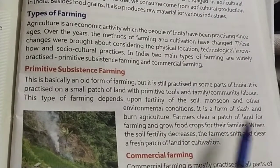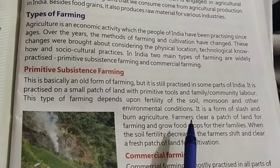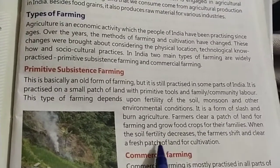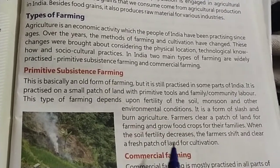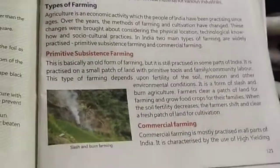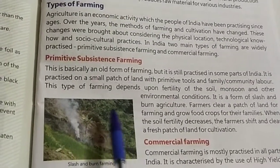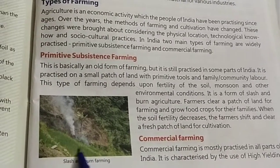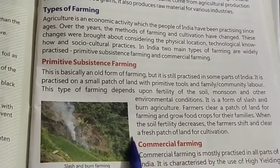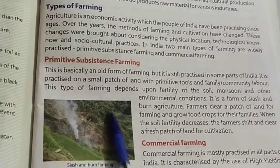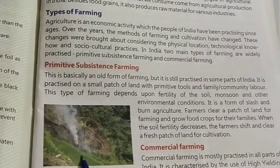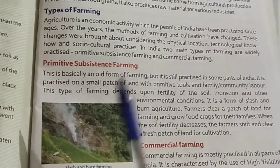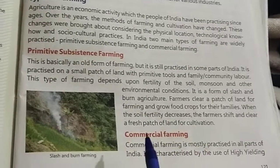Primitive farming is a form of slash and burn agriculture. Farmers clear a patch of land for farming and grow food crops for their families. When soil fertility decreases, the farmers shift and clear a fresh patch of land for cultivation. Nowadays, commercial farming is mostly practiced in all parts of India.